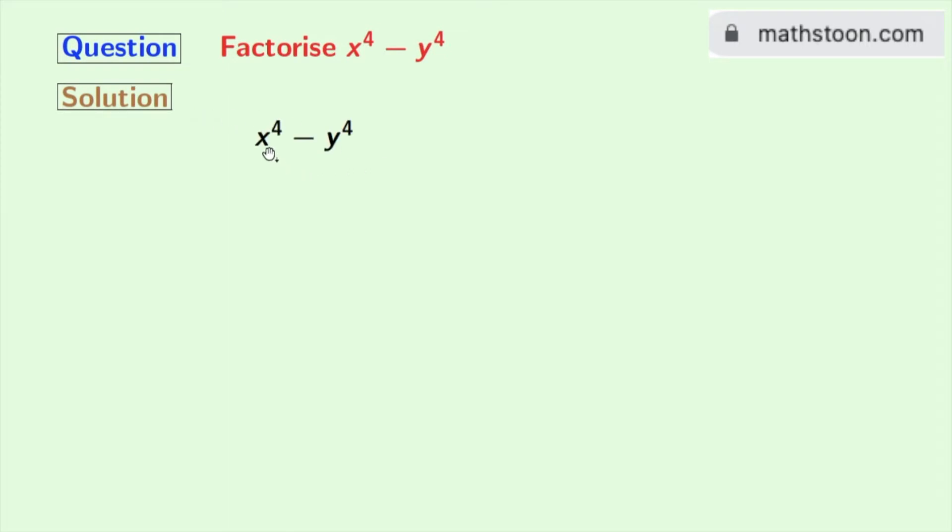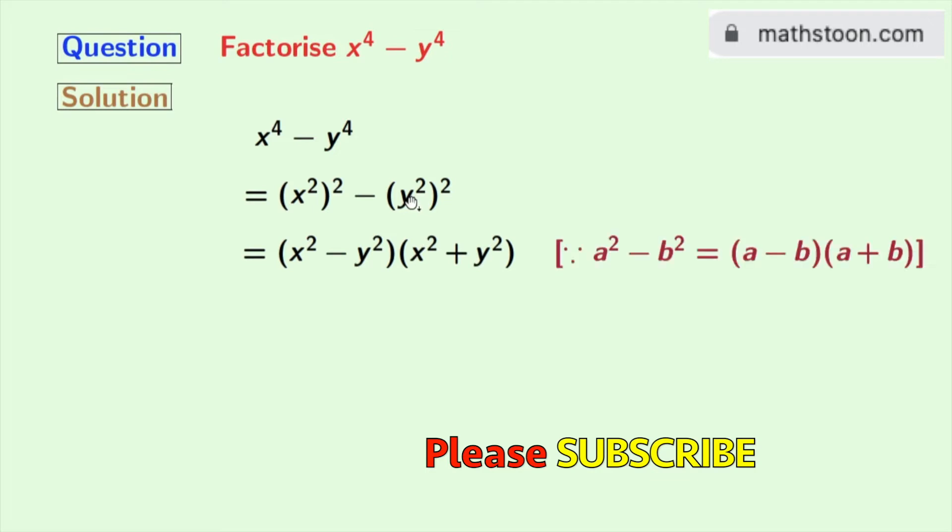So this is x power 4 minus y power 4. Now we will write x power 4 as x squared whole squared, and y power 4 as y squared whole squared. Now look, this is in the form of a square minus b square, where a is x squared and b is y squared. So we can apply the formula of a square minus b square.